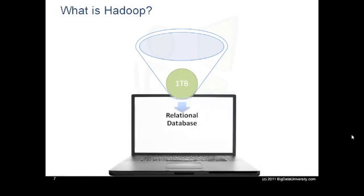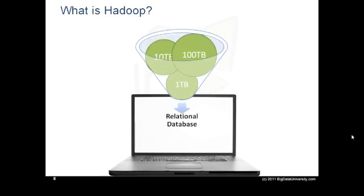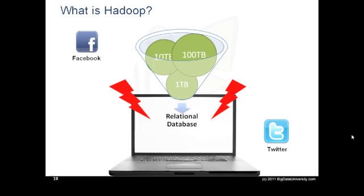So you scale up by investing in a larger computer, and you are then okay for a few more months when your data grows to 10 terabytes and then 100 terabytes, and you are fast approaching the limits of that computer. Moreover, you are now asked to feed your application with unstructured data coming from sources like Facebook, Twitter, RFID readers, sensors and so on. Your management wants to derive information from both the relational data and the unstructured data, and wants this information as soon as possible.